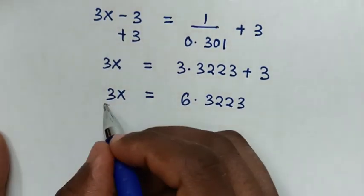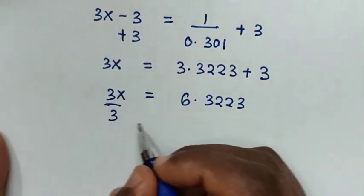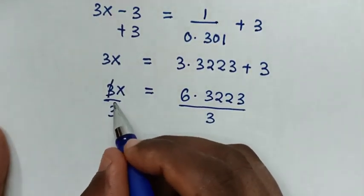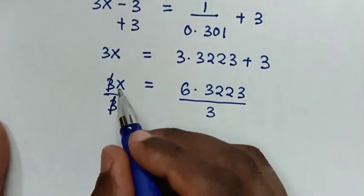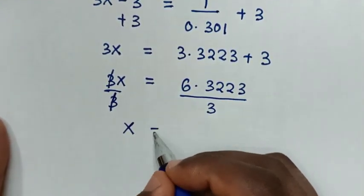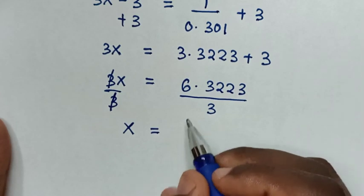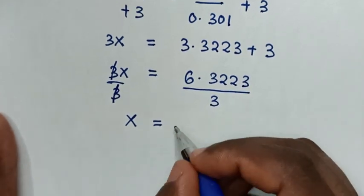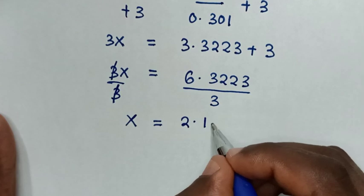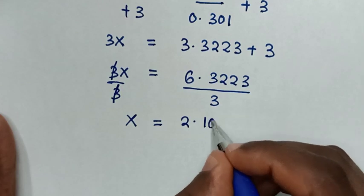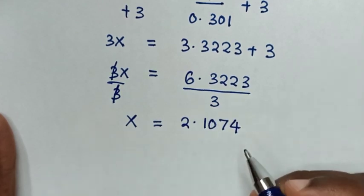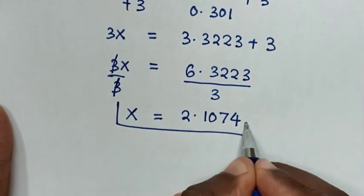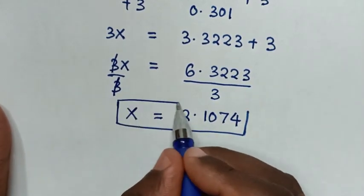Then 3x is equal to 3.3223 plus 3, which is 6.3223. Then we divide by 3 on both sides, so the 3s cancel, giving x is equal to 6.3223 divided by 3, which is 2.1074. Therefore, this is the final answer for the value of x.